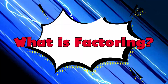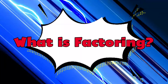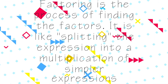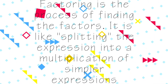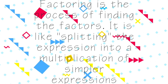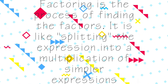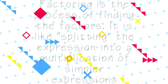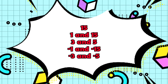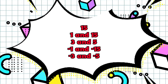First, let us define what factoring is. Factoring is the process of finding the factors. It is like splitting the expression into a multiplication of simpler expressions. Factors are the numbers that are being multiplied.